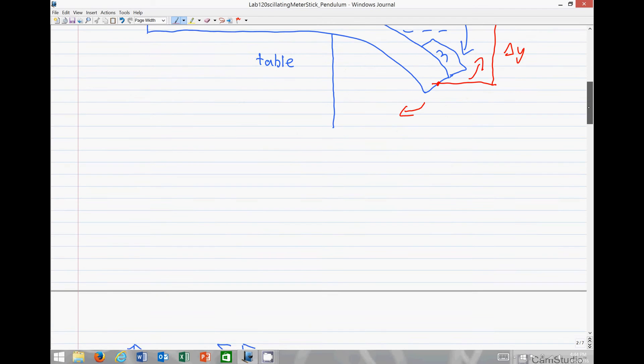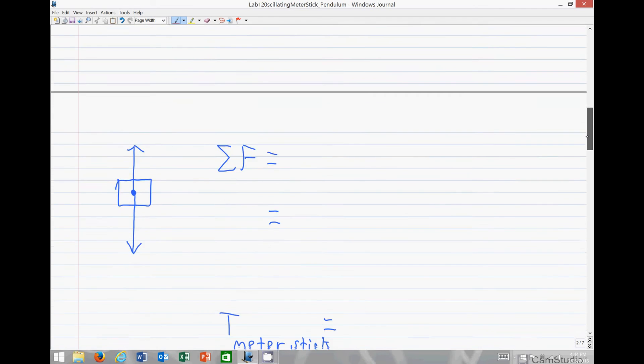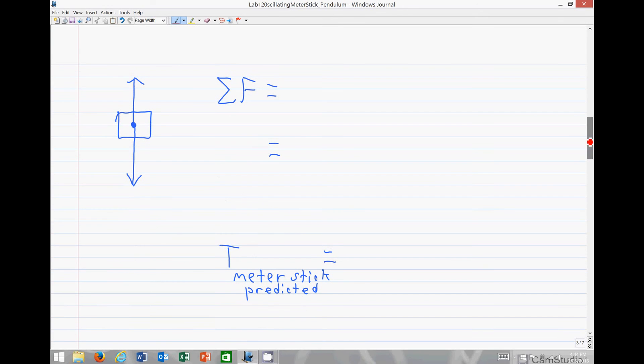To predict the period of the meter stick, we will need to find what is known as the spring constant. The spring constant represents how much this meter stick, in this case, resists moving from the equilibrium position.